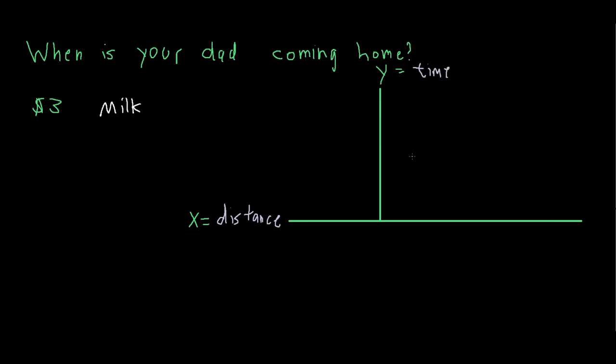Now one point of confusion for people doing this problem is that usually the x-axis is the one that defines time. However, in this case, the y-axis represents time, because I am Asian and I get to make the math rules.